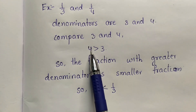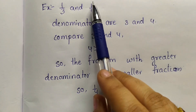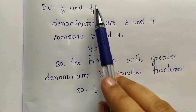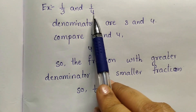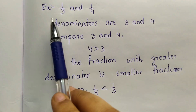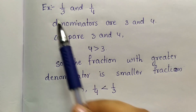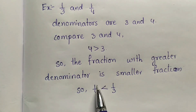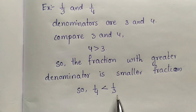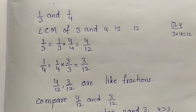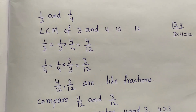We have the 4-denominator fraction, so this is the smaller one and 1 by 3 is the bigger fraction. So 1 by 4 is less than 1 by 3. Or we can convert them into like fractions.